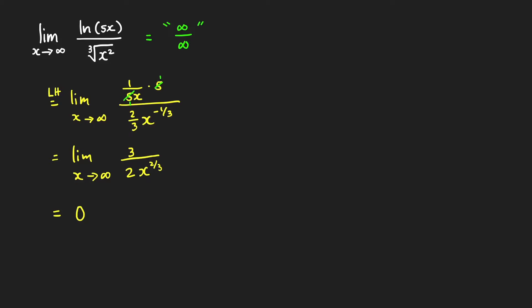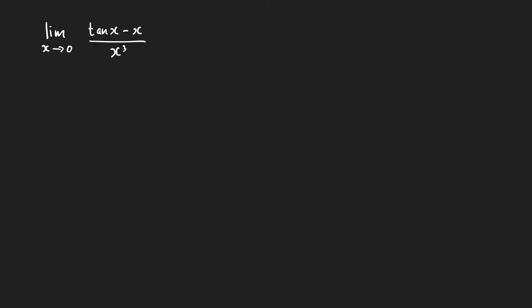Next problem: find the limit of (tan x − x) over x cubed as x approaches 0. As x approaches 0, the numerator approaches tan(0) − 0 = 0, and the denominator also approaches 0. So this is of the indeterminate form 0 over 0. We can apply L'Hôpital's rule, giving us the limit as x approaches 0 of the derivative of tangent, which is secant squared x, minus 1, over the derivative of x cubed, which is 3x squared.